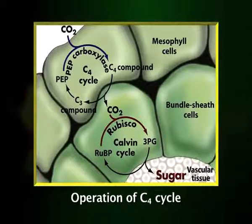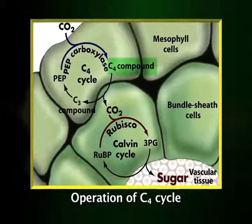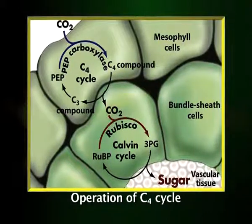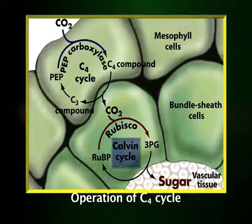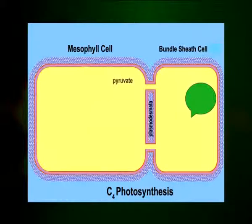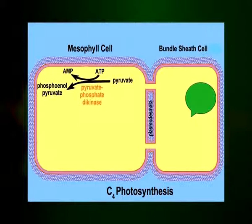Instead of direct fixation by RuBisCO in the Calvin cycle, mesophyll cells incorporate carbon dioxide into a four-carbon organic acid which has the ability to regenerate carbon dioxide in the chloroplasts of the bundle sheath cells, which can then utilize this carbon dioxide to generate carbohydrates by the conventional C3 pathway. The first step in the pathway is the conversion of pyruvate to phosphoenolpyruvate (PEP) by the enzyme pyruvate orthophosphate dikinase. This reaction requires inorganic phosphate and ATP plus pyruvate, producing phosphoenolpyruvate, AMP, and inorganic pyrophosphate (PPi). The next step is the fixation of carbon dioxide into oxaloacetate by the enzyme PEP carboxylase.